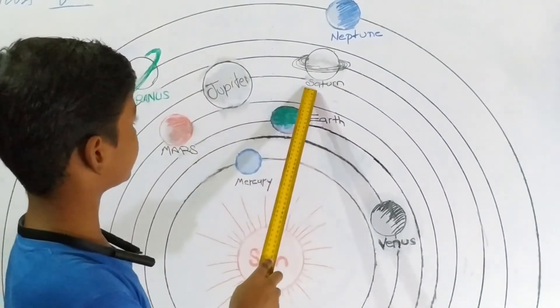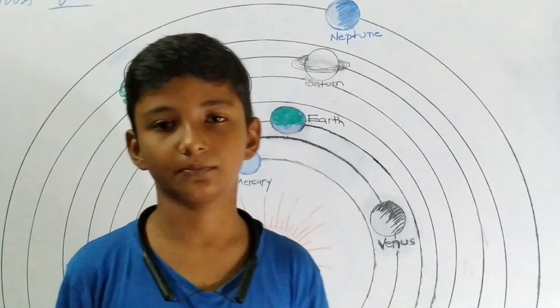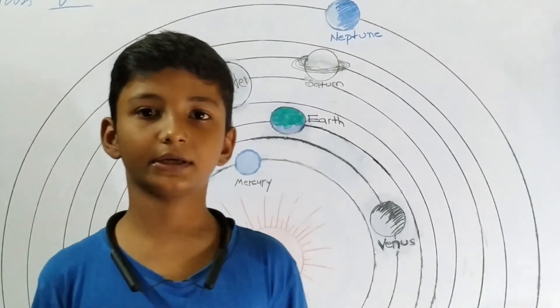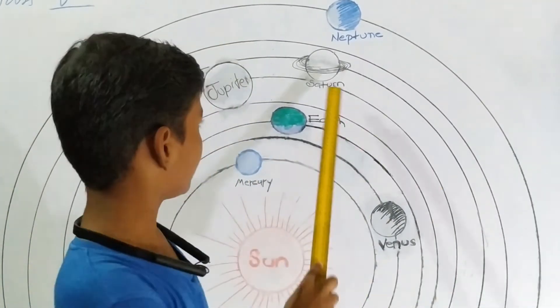Saturn is the sixth planet in our solar system. We call it the ringed planet because it has rings around it.